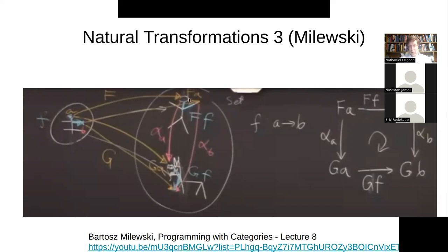What a natural transformation does is give us this Rosetta Stone that tells us how to translate from the first embedding — given by functor F — to the embedding performed by functor G. The natural transformation tells us: the head of the human maps down to the head of the dog; the torso of the person maps to the torso of the dog; the hand of the person maps to the paw of the dog. It relies on there being morphisms already existing in the target category — it identifies those morphisms as components of the Rosetta Stone.